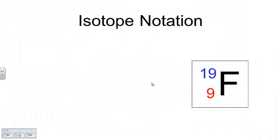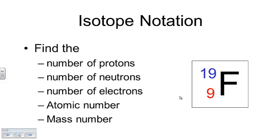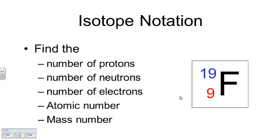Let's look at this example. This is an isotope of the element fluorine. The mass number here is 19 and the atomic number is 9. The number of protons for this isotope is 9, the number of neutrons is 10, and those two numbers together make 19.